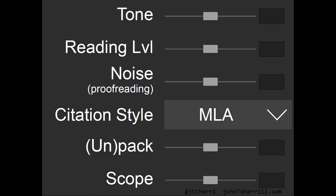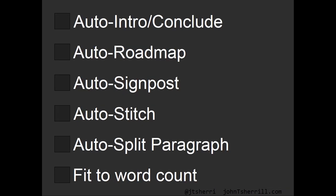So what would I expect that interface to look like? I would hope that it had sliders for tone, adjusting reading level or formality, adding noise to make it seem more human, adjusting citation styles automatically, summarizing and unpacking, or making modifications to scope — all on sliding scales. The GUI could also make it easier to automate some of the more tedious revision and editing tasks, such as auto-roadmapping or signposting, auto-stitching for rearranging paragraphs or sections, fitting to word count, showing a histogram of citation dates, or even gender bias in citations.